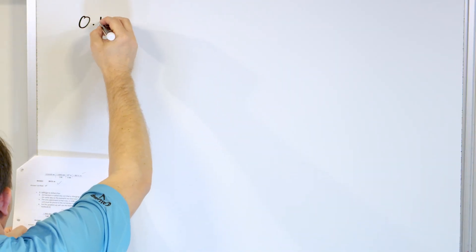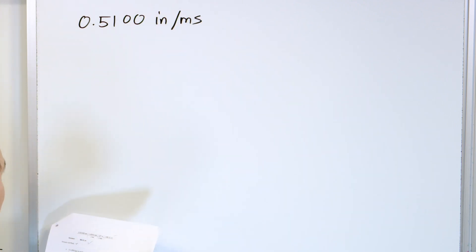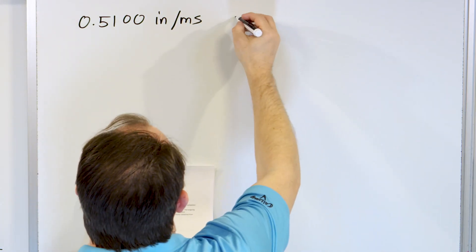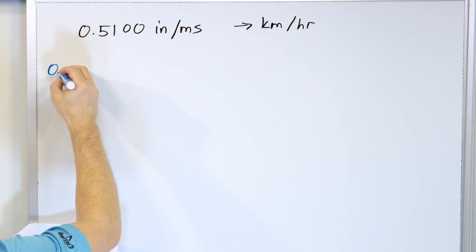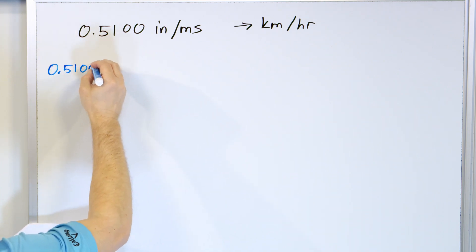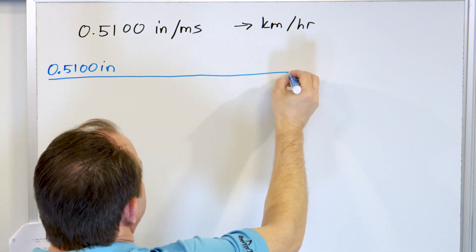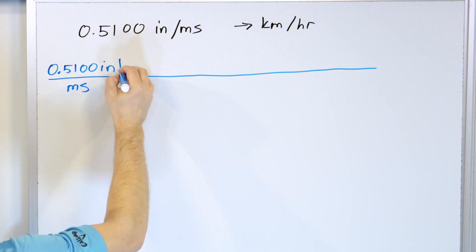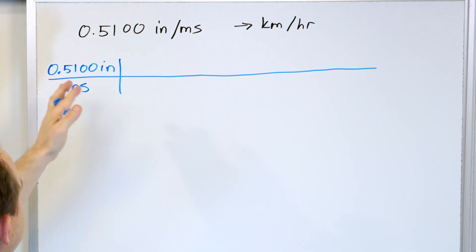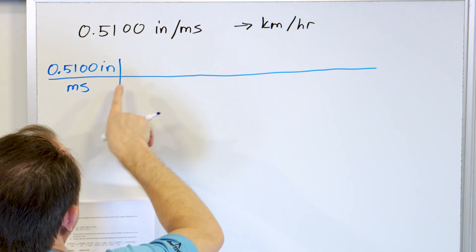Let's calculate 0.5100 inches per millisecond — a really weird unit of velocity — and convert it into kilometers per hour. I write 0.5100 inches on top and milliseconds on the bottom. I'm going to need a lot of space. Focus on one unit at a time: first the inches, then the milliseconds.